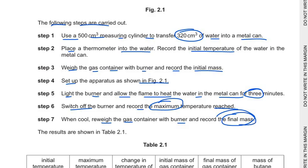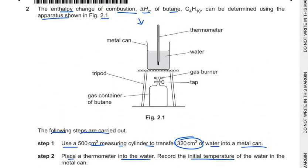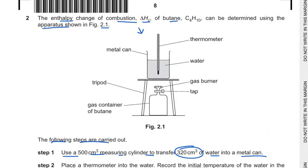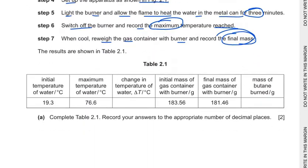These are the few things which we need to consider, and here is the apparatus where we can see. Here is a metal can with some water, thermometer, the gas burner, the tripod stand and all that. Now let's see what are the sub-questions following.